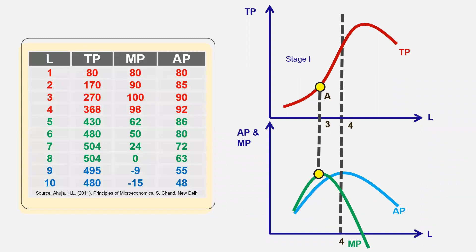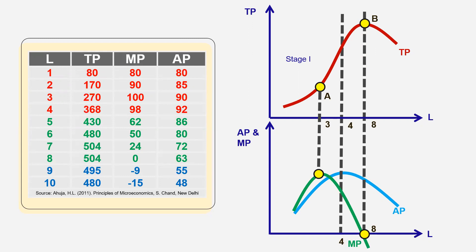Now let's understand stage two. See the green color in the table. When we have eight units of labor, the marginal production is zero and total production is maximized. See point B — total production is maximized and marginal production is zero. This is stage two.